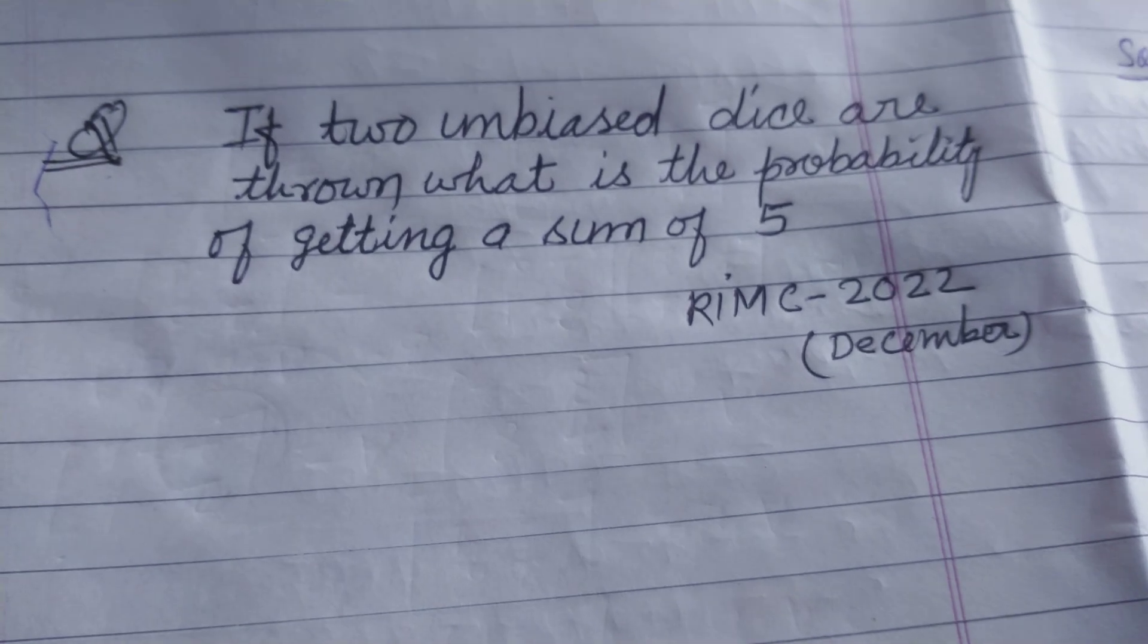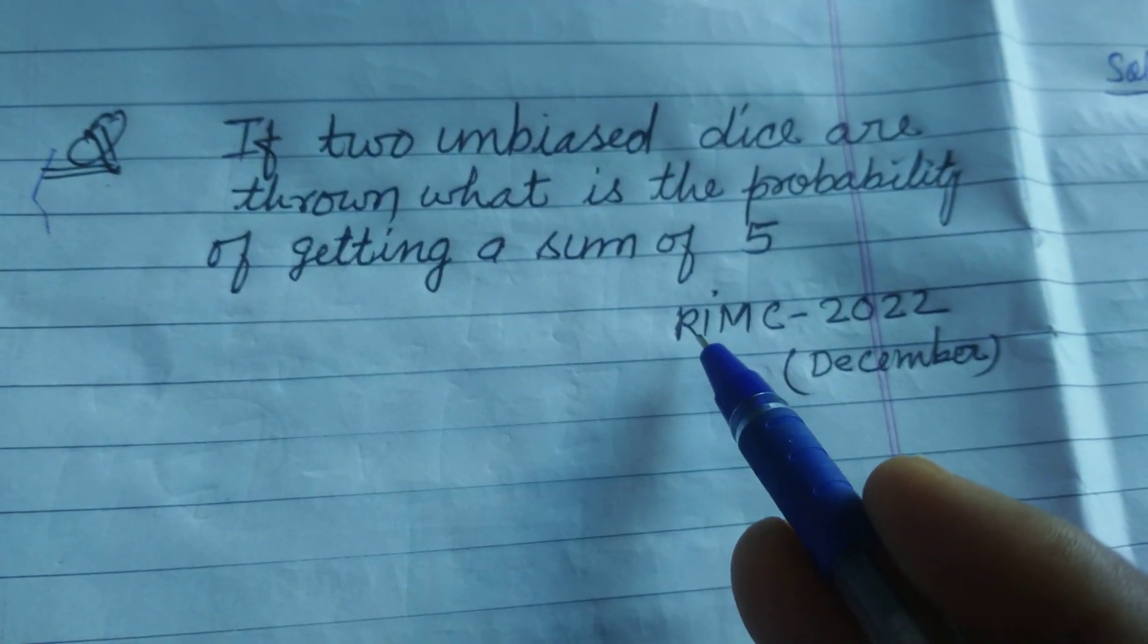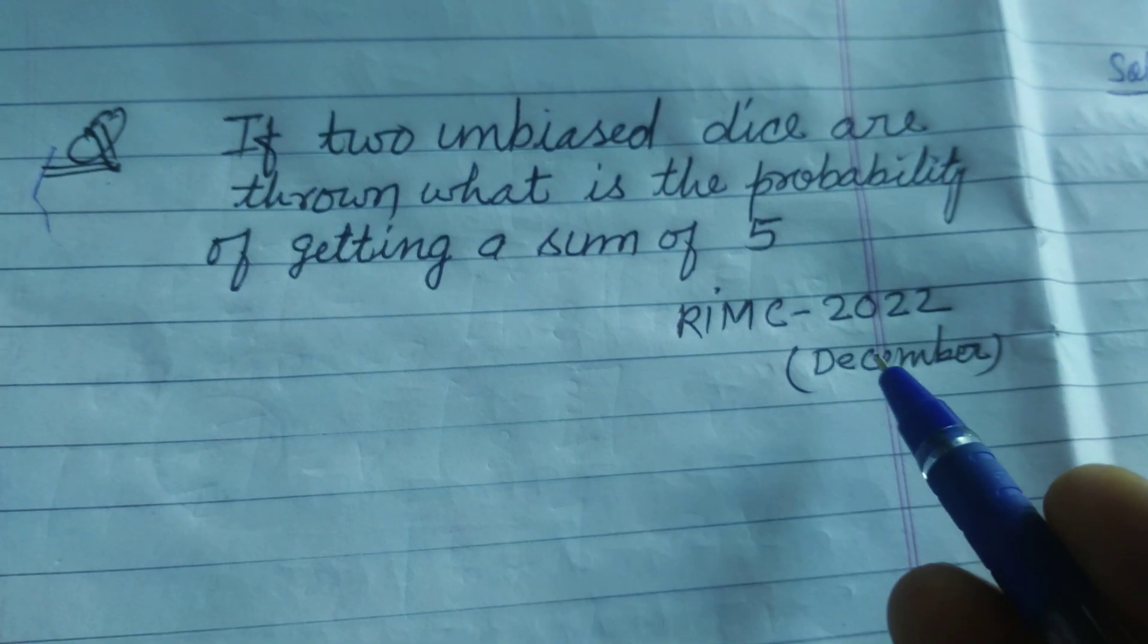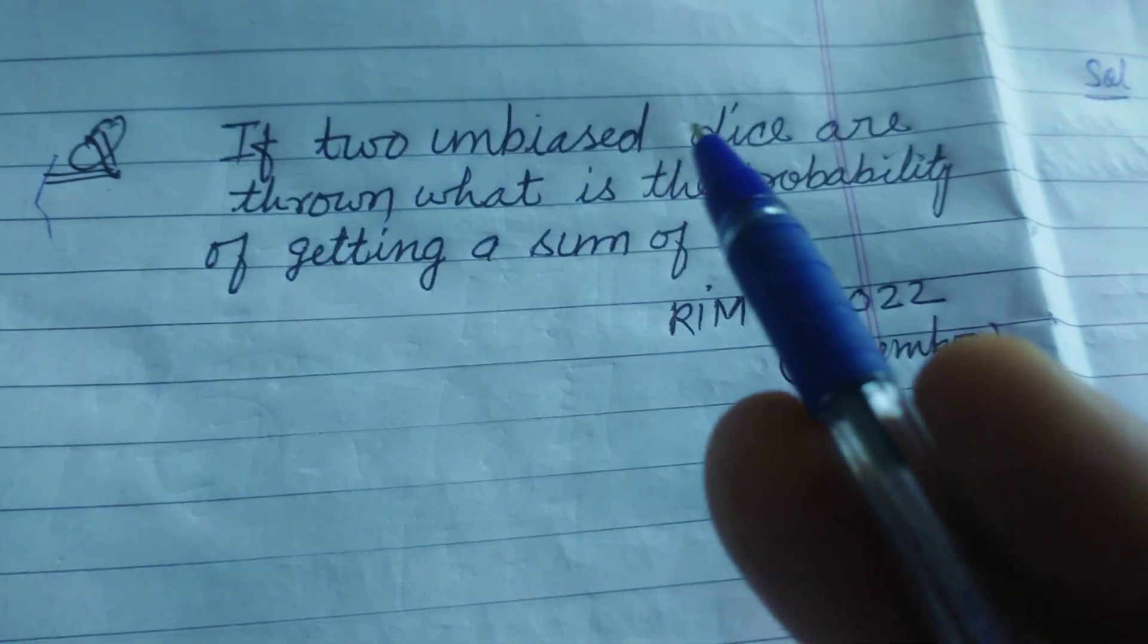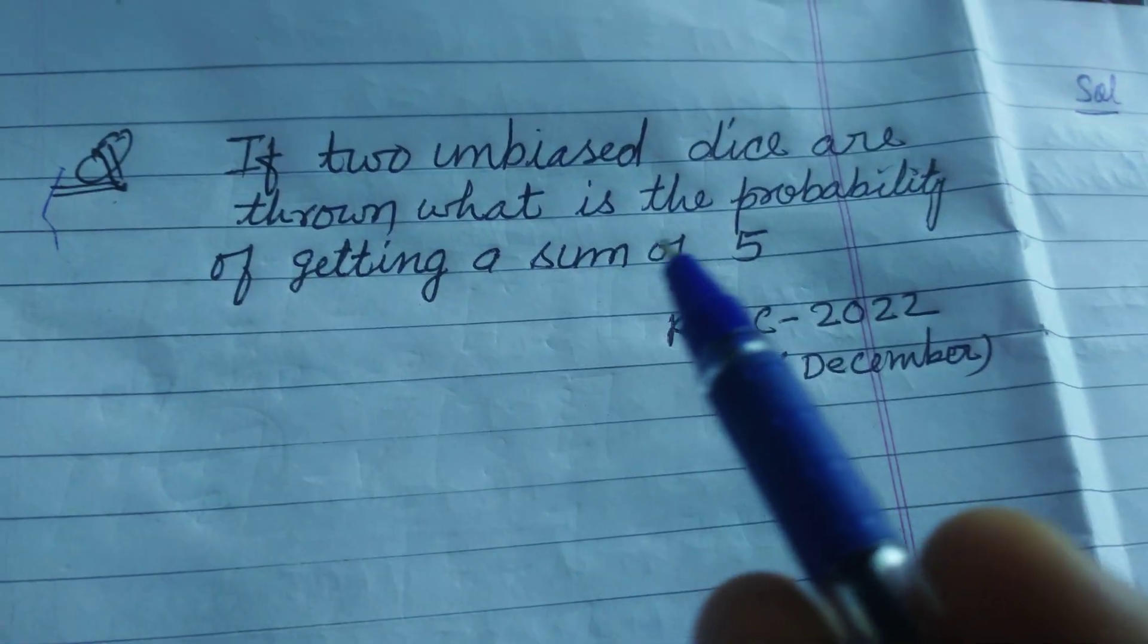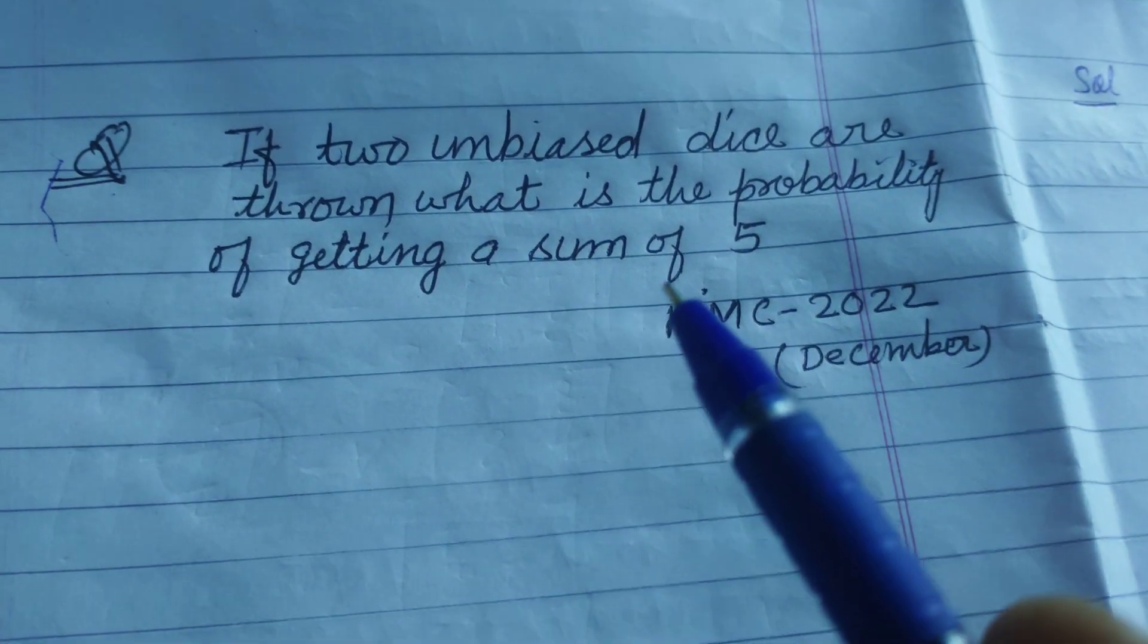Hello students, welcome to this YouTube channel. Here is a question from RIMS 2022 December: if two unbiased dice are thrown, what is the probability of getting a sum of five?